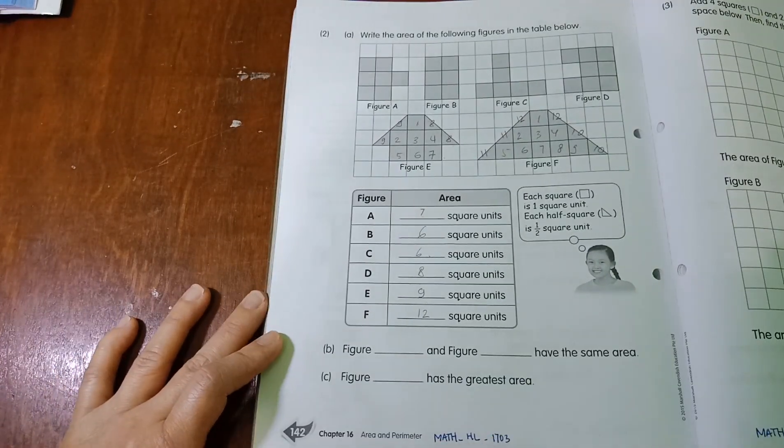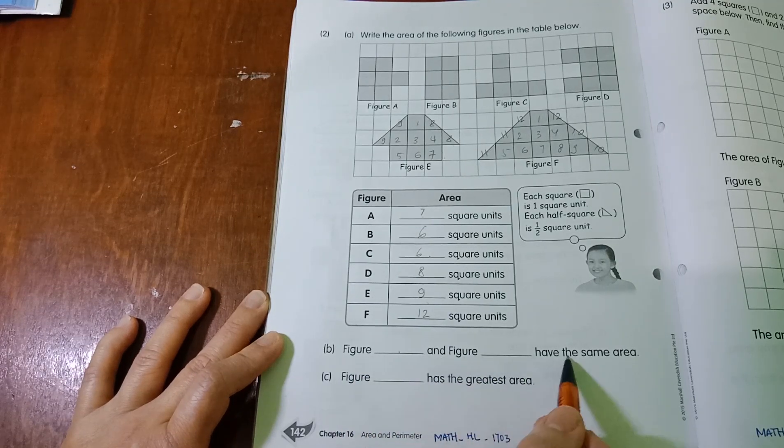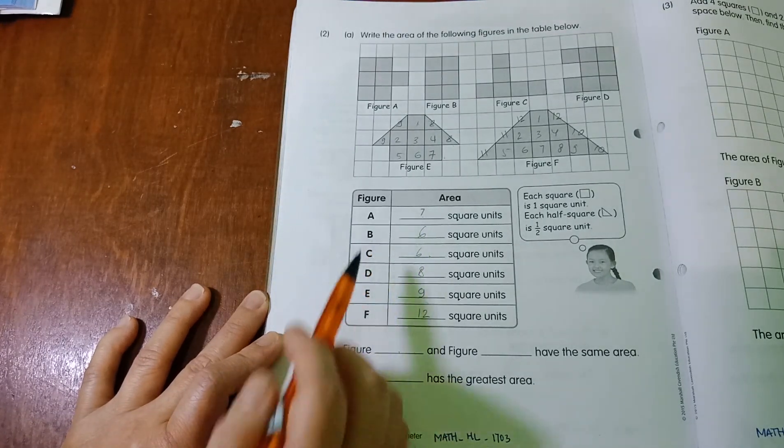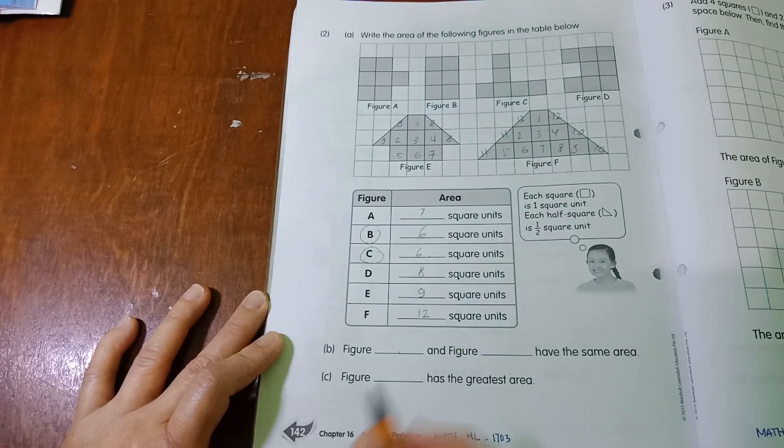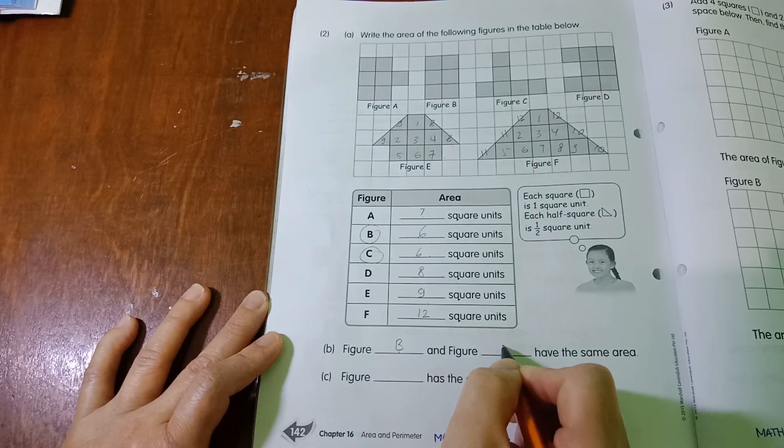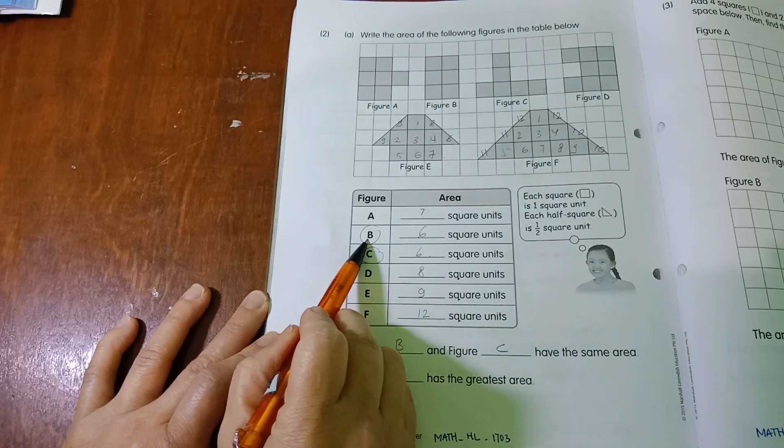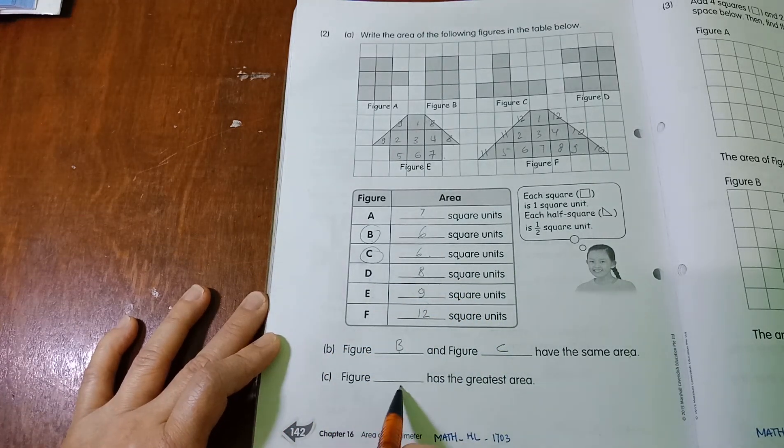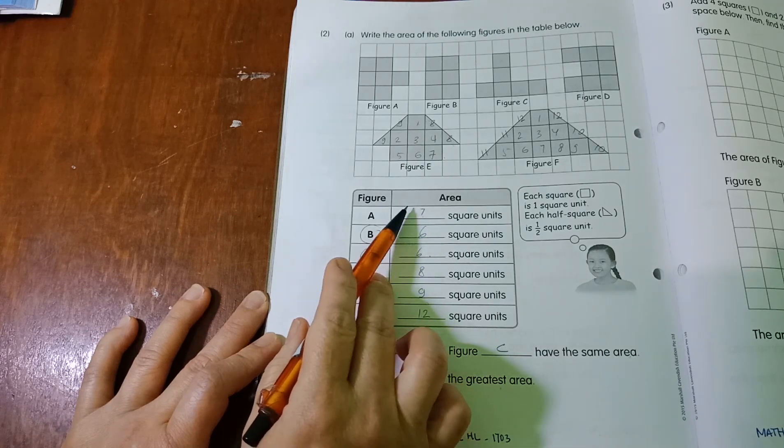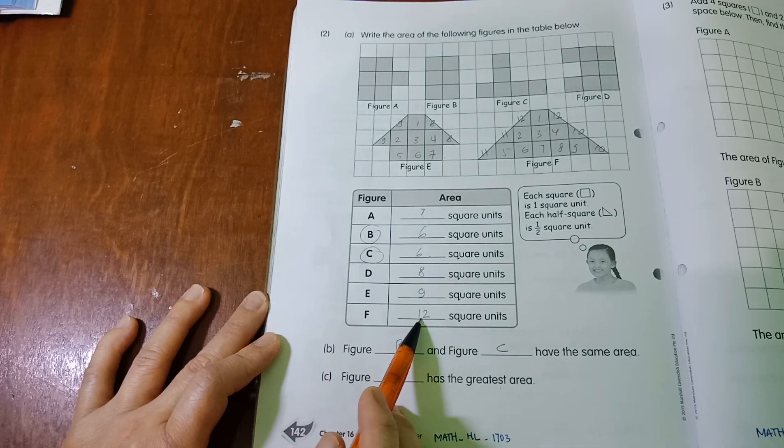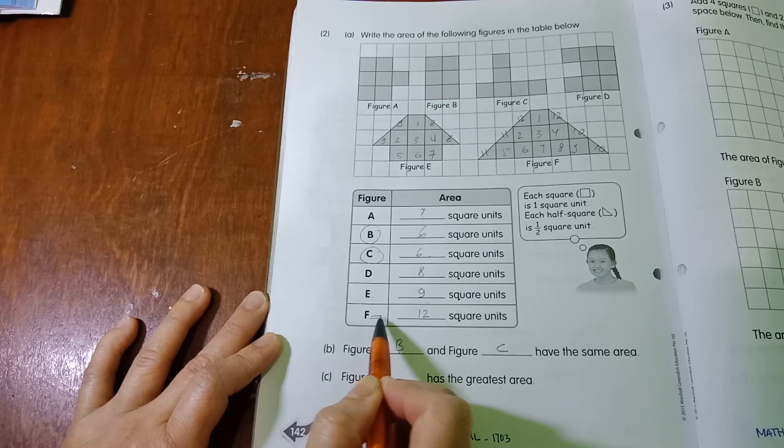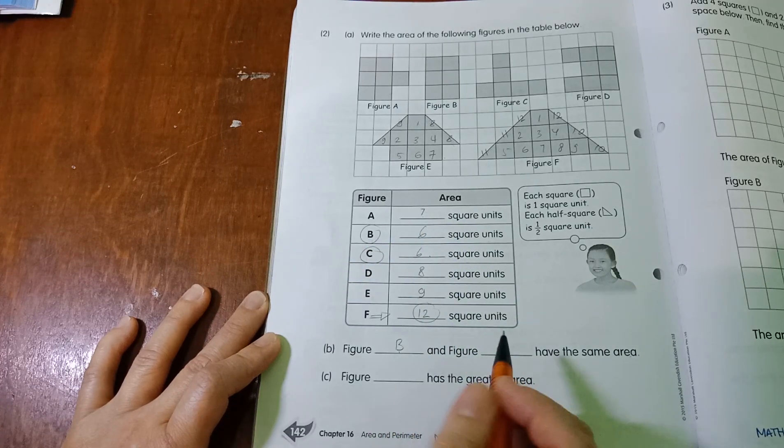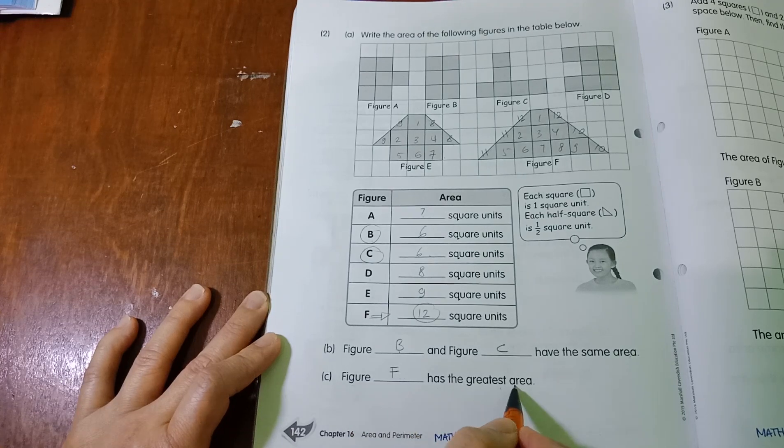Okay, now we're going to move to the next question. Figure blank and figure blank have the same area. Now let's find out which ones have the same square unit. It's B and C, right? So figure B and figure C have the same unit. Because figure B has 6 square units and figure C has 6 square units too. What about the figure that has the greatest number? You're going to check which the greatest number is. Aha, yes, you are correct. So figure F got 12 square units, which is the most square units there. Okay, so figure F has the greatest unit. That's all.